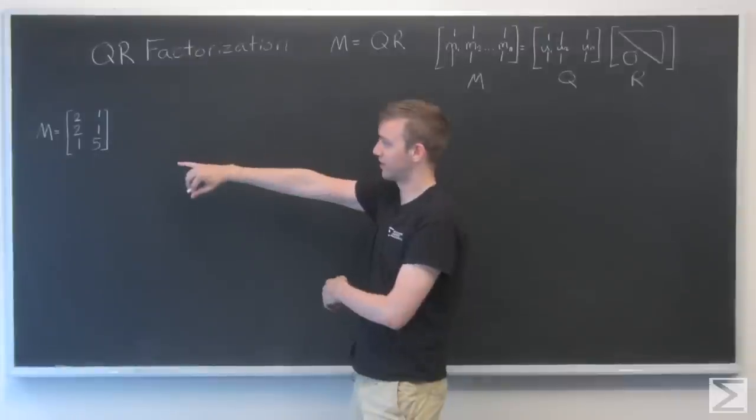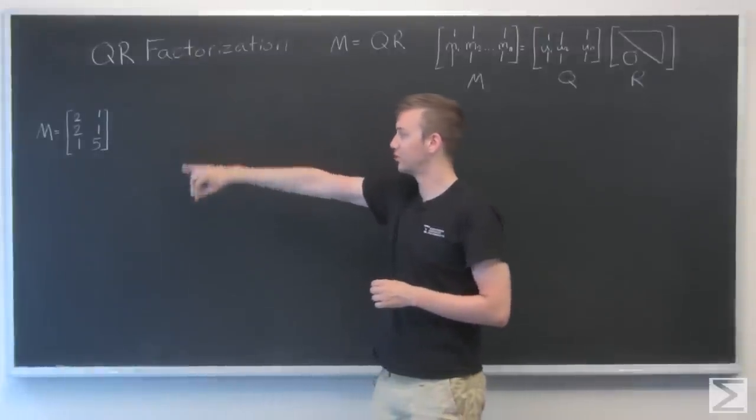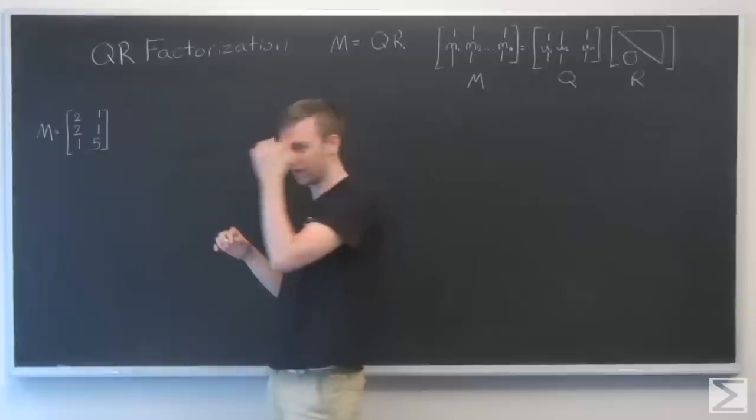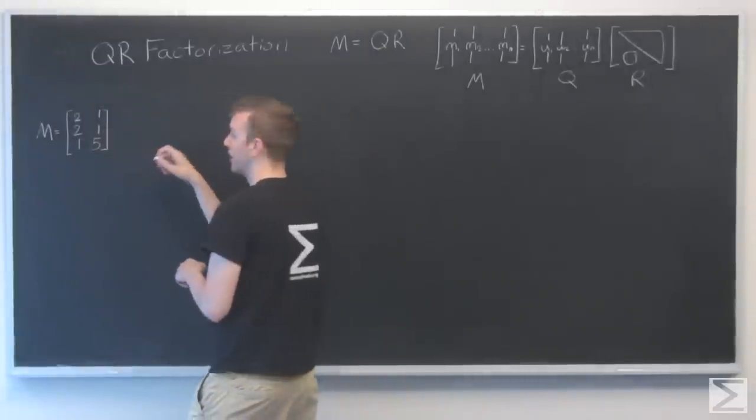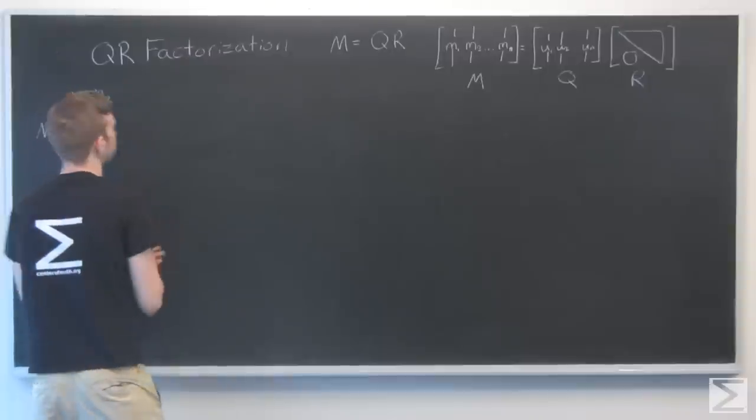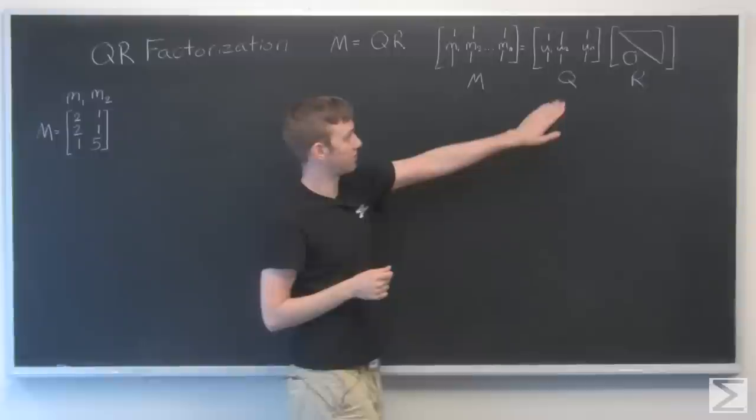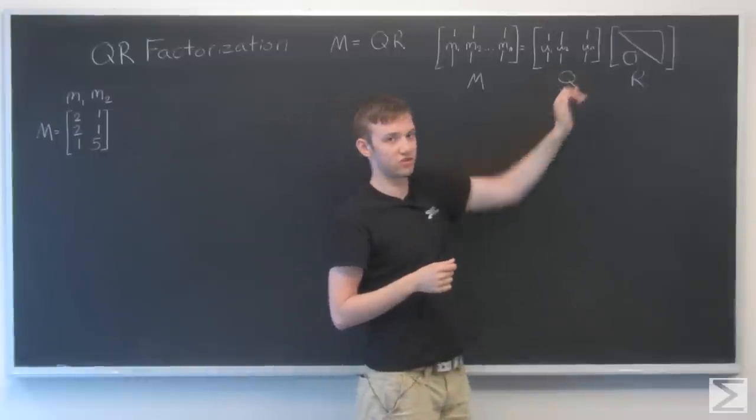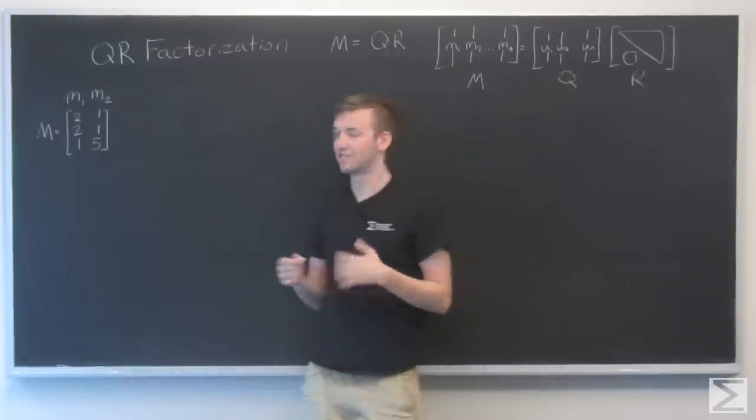So we're going to use this example here, where my M is [2, 2, 1] and [1, 1, 5], and these are going to be my m1 and m2. So we need to start by finding our Q, and the Q is just the Gram-Schmidt process.